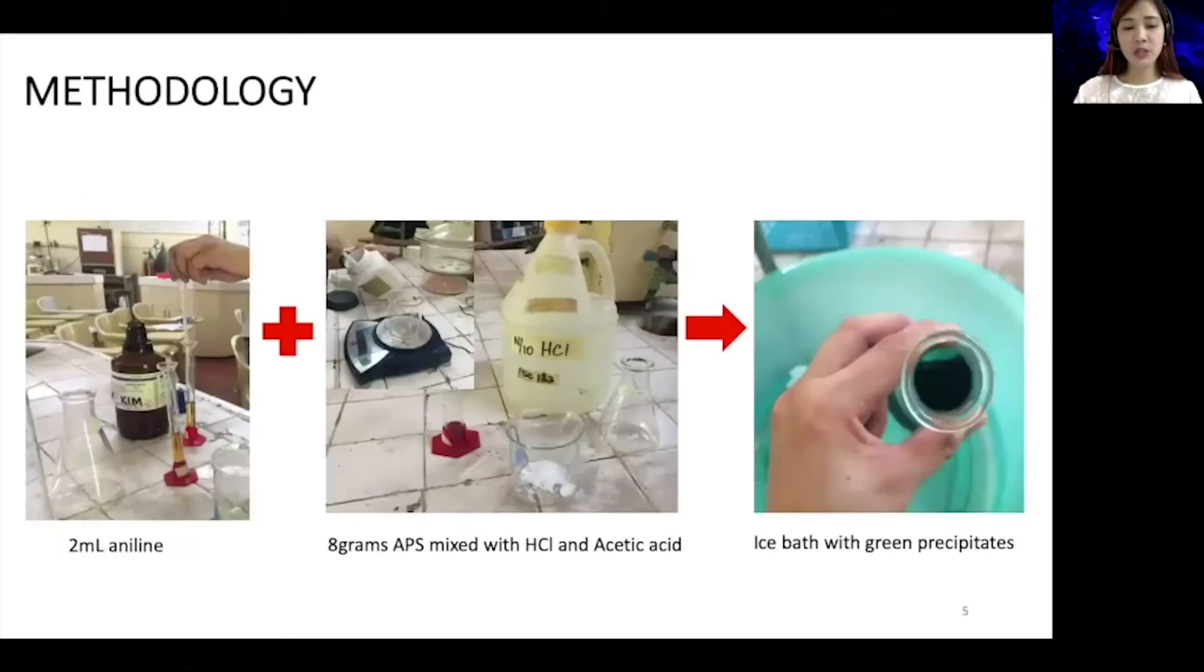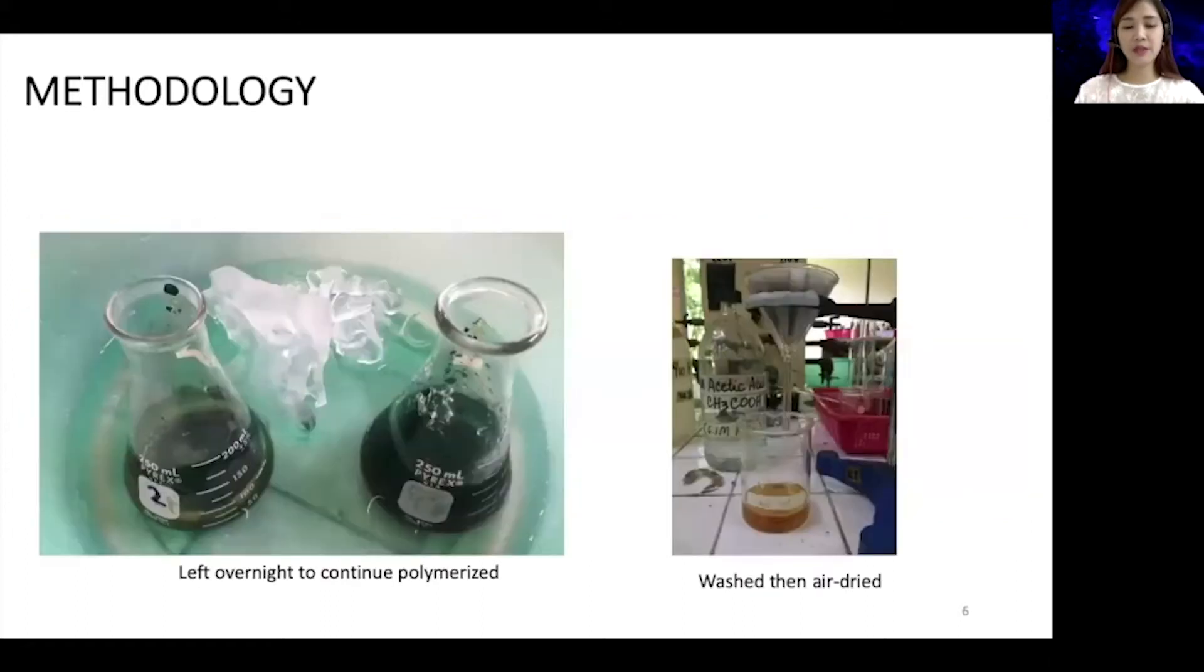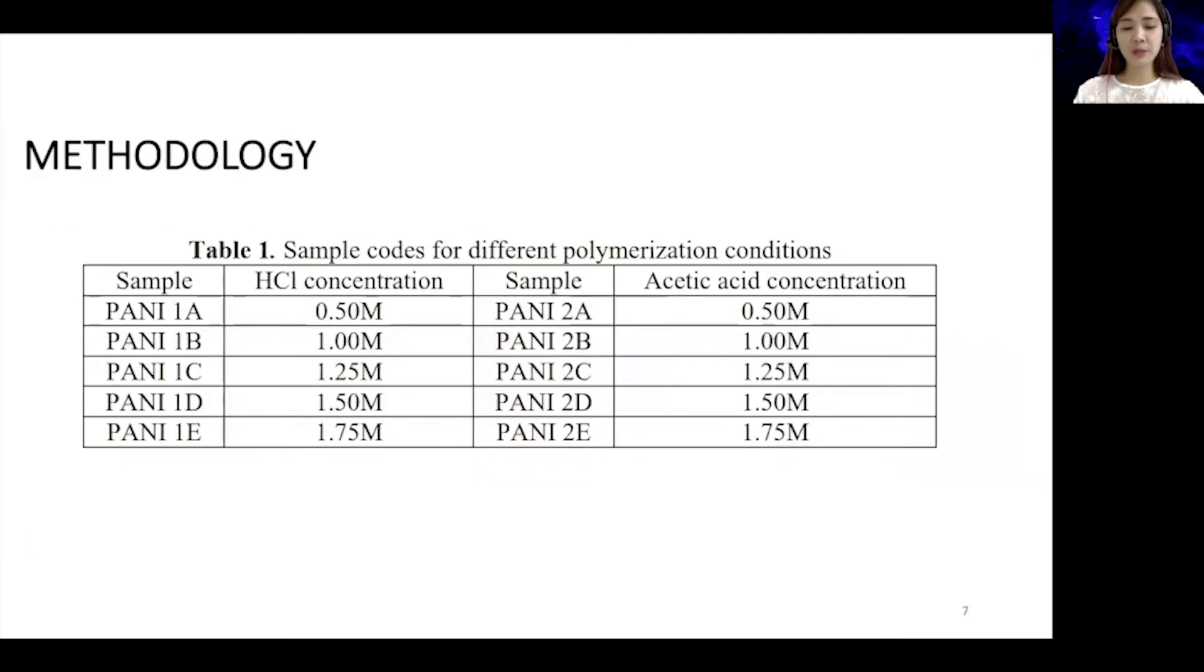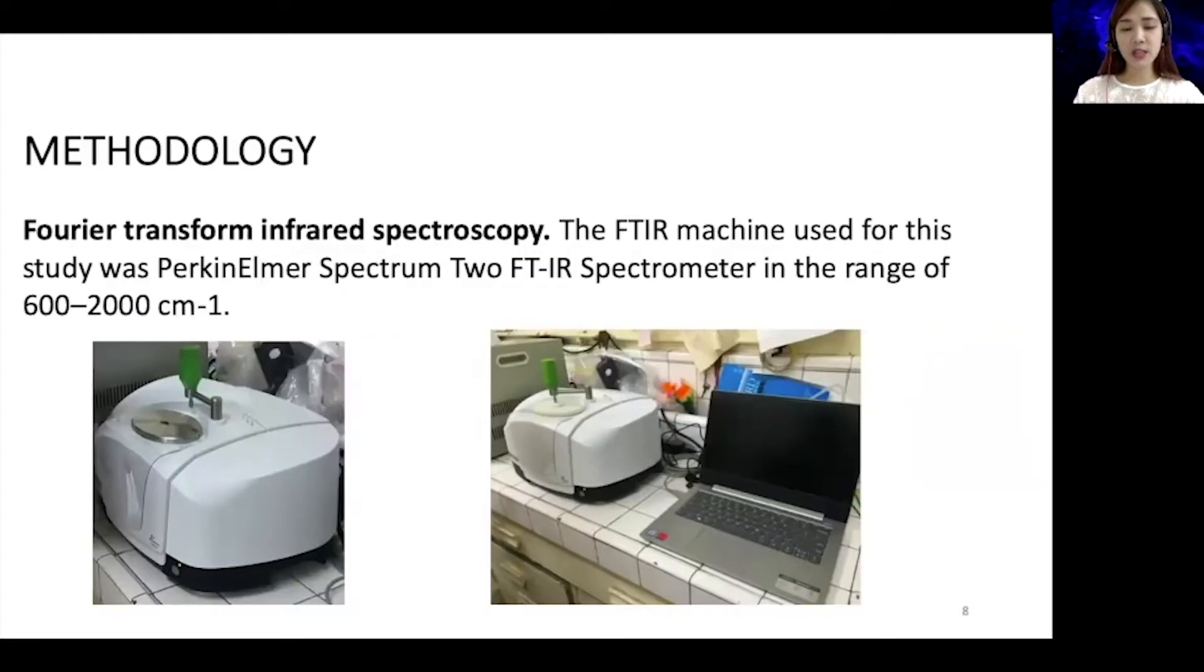For the methodology, pure aniline and ammonium persulfate was prepared separately then mixed with varying concentrations of HCl and acetic acid into a flask to commence polymerization. The solutions were mixed in an ice bath until finished black precipitates are formed. The samples were left to continue polymerization overnight, and the synthesized products were filtered, washed, and then air-dried. This is the sample codes for different polymerization conditions, and this is the FTIR machine used for characterization.